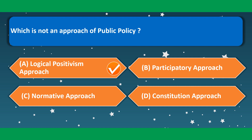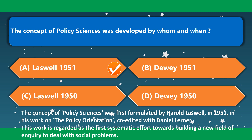Which is not an approach of public policy? The correct option is the logical positivism approach. The concept of policy sciences was developed by whom and when? It was developed by Harold Lasswell in 1951 — correct option is option A. The concept of policy sciences was first formulated by Harold Lasswell in 1951 in his work on policy orientation, co-edited with Daniel Lerner, regarded as the first systematic effort towards building a new field of inquiry.